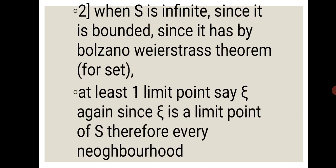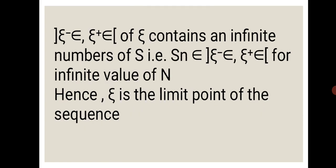From the second possibility, when S is infinite, since the sequence Sn is bounded, by the Bolzano-Weierstrass theorem for sets, S has at least one limit point, say xi. Since xi is a limit point of S, therefore every neighborhood — the open interval (xi minus epsilon, xi plus epsilon) — contains an infinite number of members of S. That is, Sn belongs to the open interval (xi minus epsilon, xi plus epsilon) for an infinite number of values of n. Hence, xi is a limit point of the sequence.